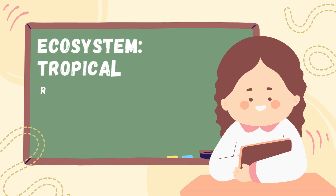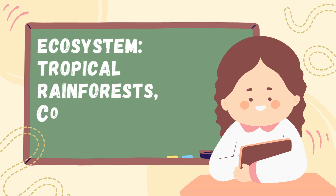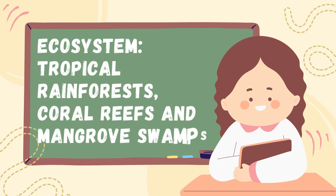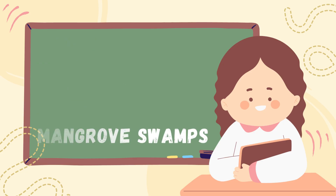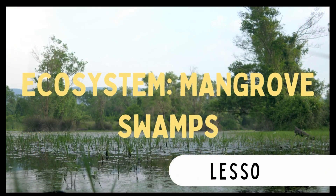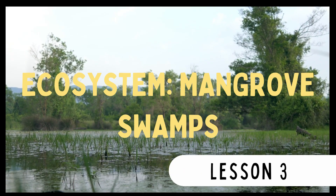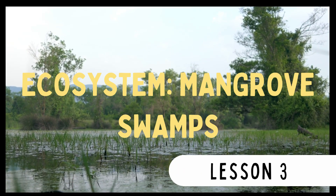Ecosystem. Tropical Rainforests. Coral Reefs and Mangrove Swamps. Lesson 3: Ecosystem — Mangrove Swamps.